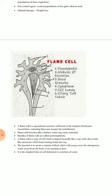A flame cell is a specialized excretory cell found in the simplest freshwater invertebrates including flatworms. Flame cells function like a kidney, removing waste material; bundles of flame cells are called protonephridia. A flame cell is shaped basically like a cup with cilia — hair-like structures that beat inside the cup, creating a current of fluid that sweeps nitrogenous waste out of the body through a duct opening. It is the simplest form of cell dedicated to waste excretion. Hope you enjoyed the video — stay motivated, God bless you, Allah Hafiz.